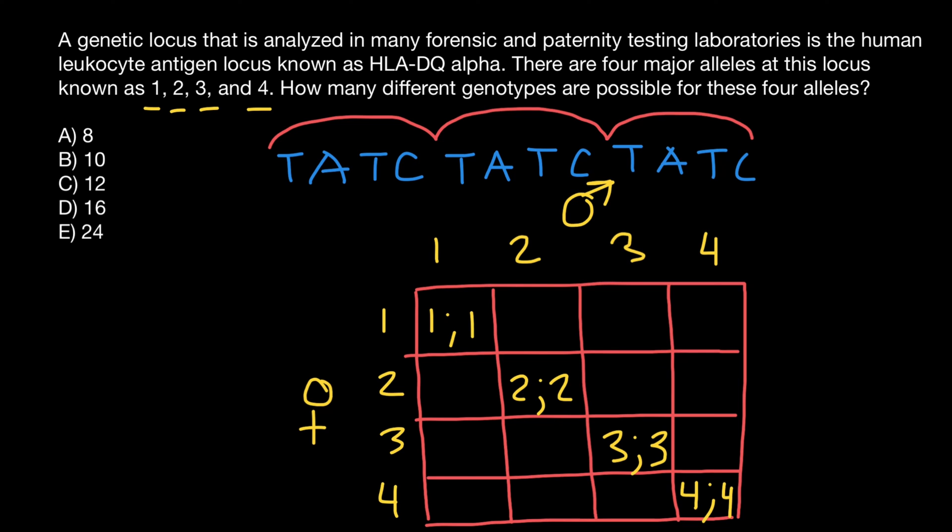And take a look what other variants we may get. Two and one. Three and one. Four and one here. One and two here. Three and two here. Four and two here. And also one and three here. Two and three here. Four and three here. And one and four here. Two and four here. Three and four here.